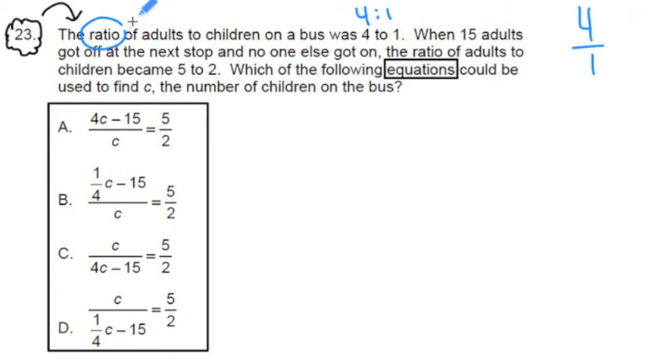And in this ratio, a ratio is something that compares two different things like apples to oranges, feet to inches, adults to children. In this one right here, the top is adults, the bottom is children.